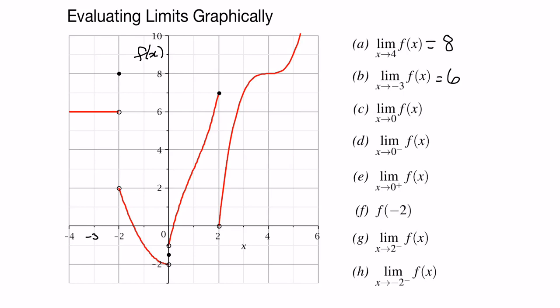Let's look at what happens when the limit approaches 0. I'm going to start with x approaching 0 from the left — that's what that minus symbol means. For values less than 0, it's this function that's defined. Let's follow it from the left and get closer and closer to 0. It looks like it's going to be negative 2. So the limit as x approaches 0 from the left is negative 2.